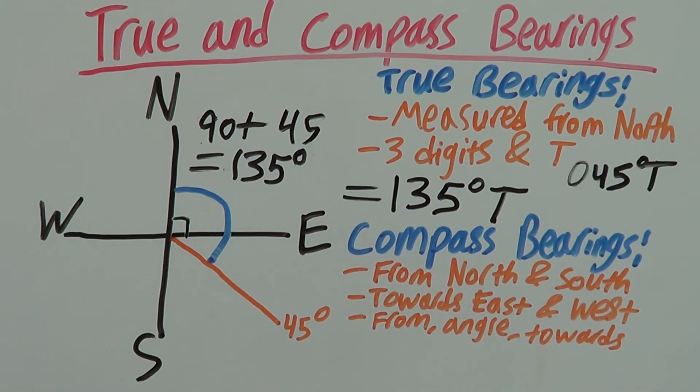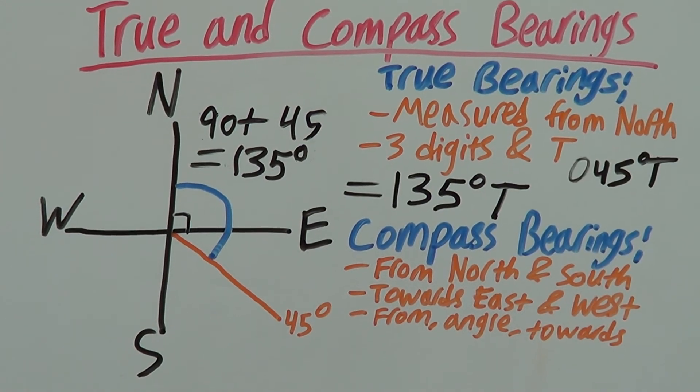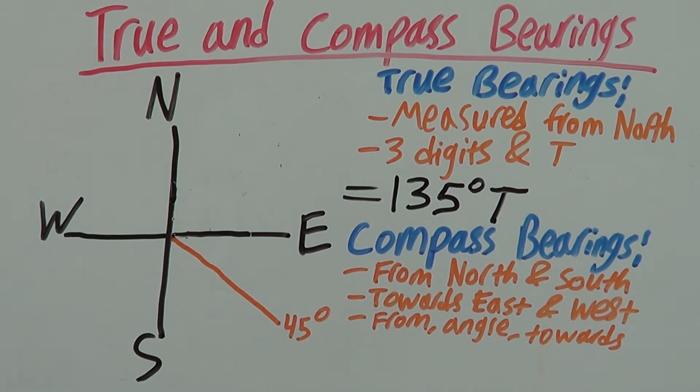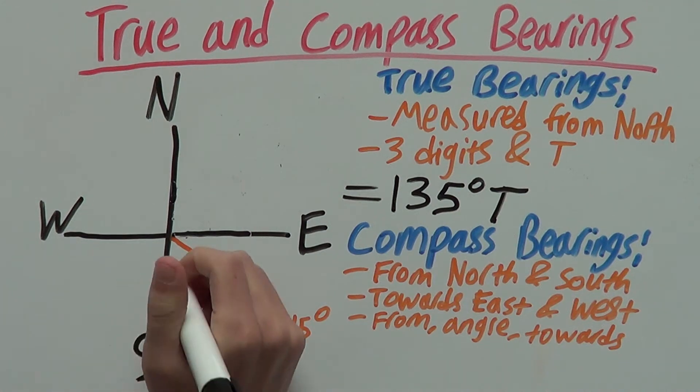Now, let's look at our compass bearing. For our compass bearing, we go from either north or south, whichever is closer. In this case, south is closer.